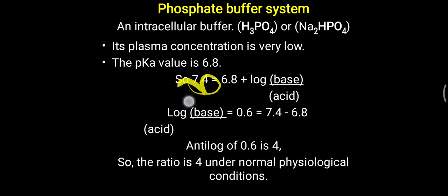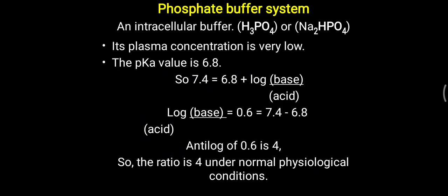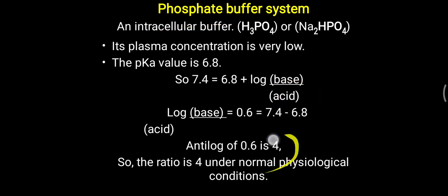At normal pH of 7.4, using pH = pKa + log(base/acid): log(base/acid) = 7.4 − 6.8 = 0.6, and the antilog of 0.6 is 4. So to maintain the phosphate buffer system, we need a base-to-acid ratio of 4. If this ratio of 4 is maintained inside the cell, the intracellular pH will be easily regulated with the help of this phosphate buffer system. This compares to a ratio of 20 in the bicarbonate buffer system.